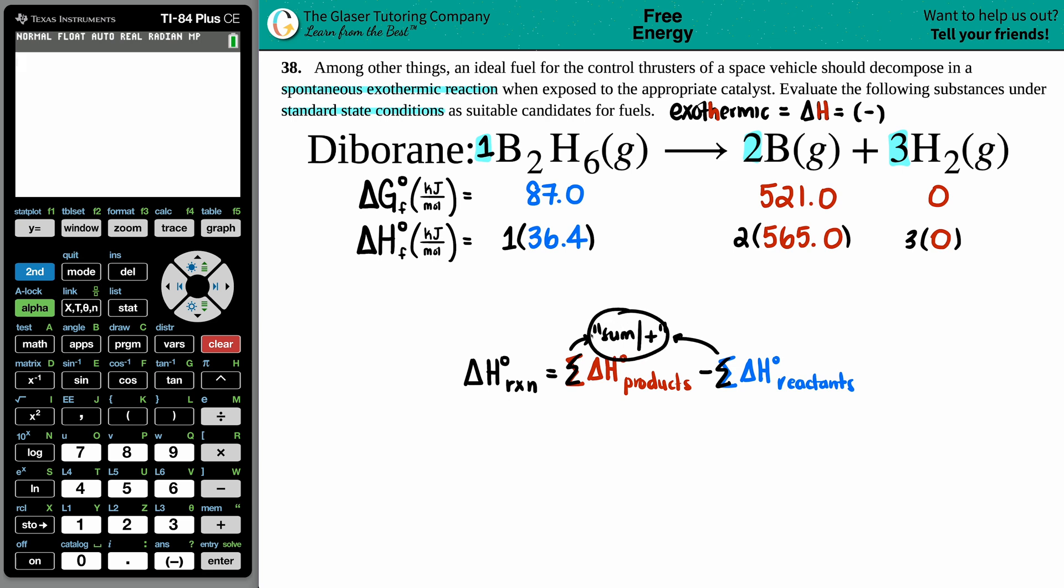Now you just got to sum each side up—literally it's B gas plus H₂, literally plus. So I take this and I add it to this component here. Since there's only one component on the reacting side, no need to add, so this side is already going to be 36.4.